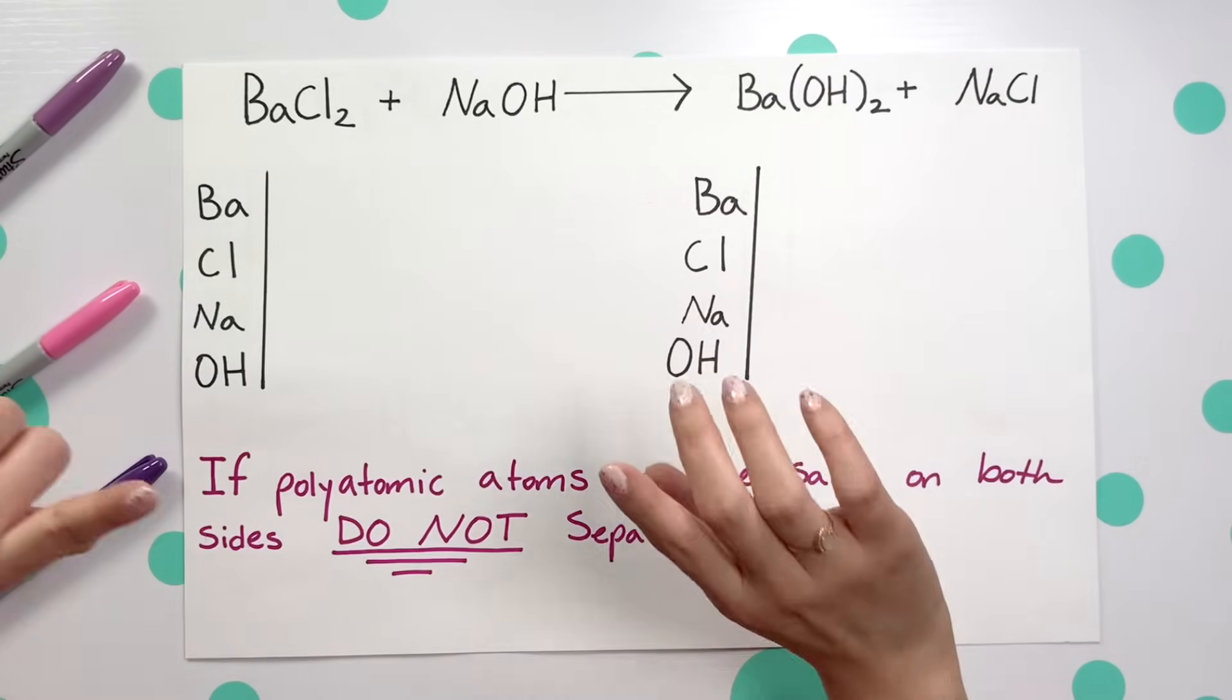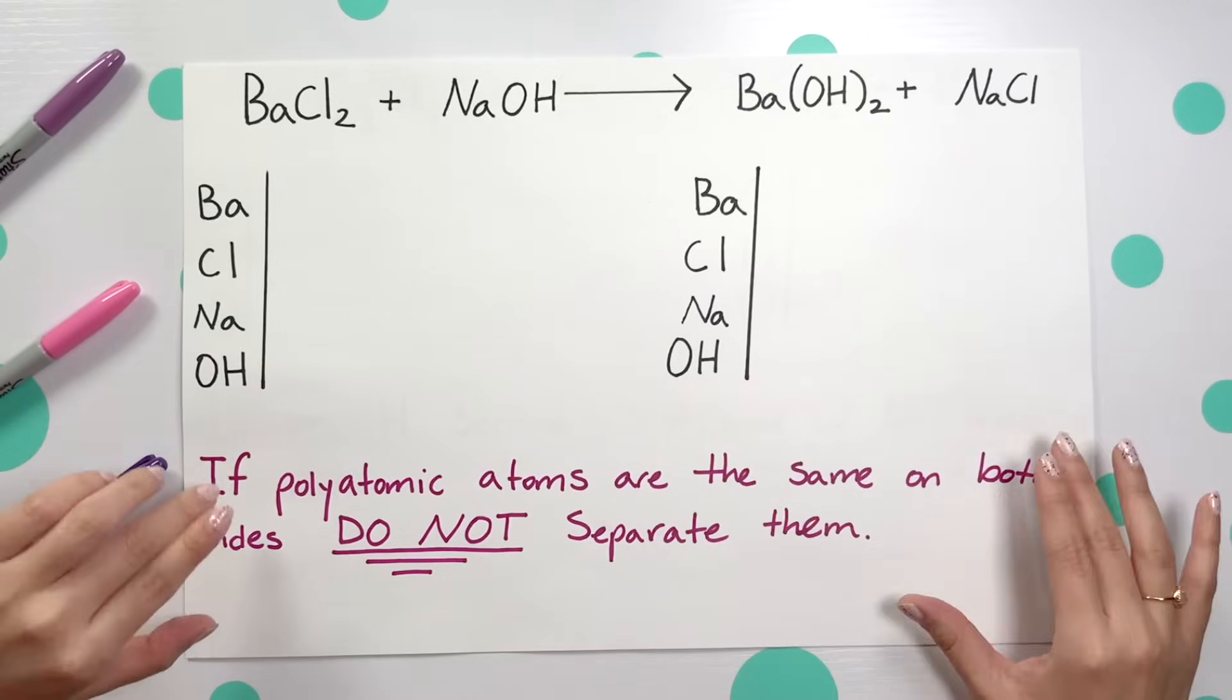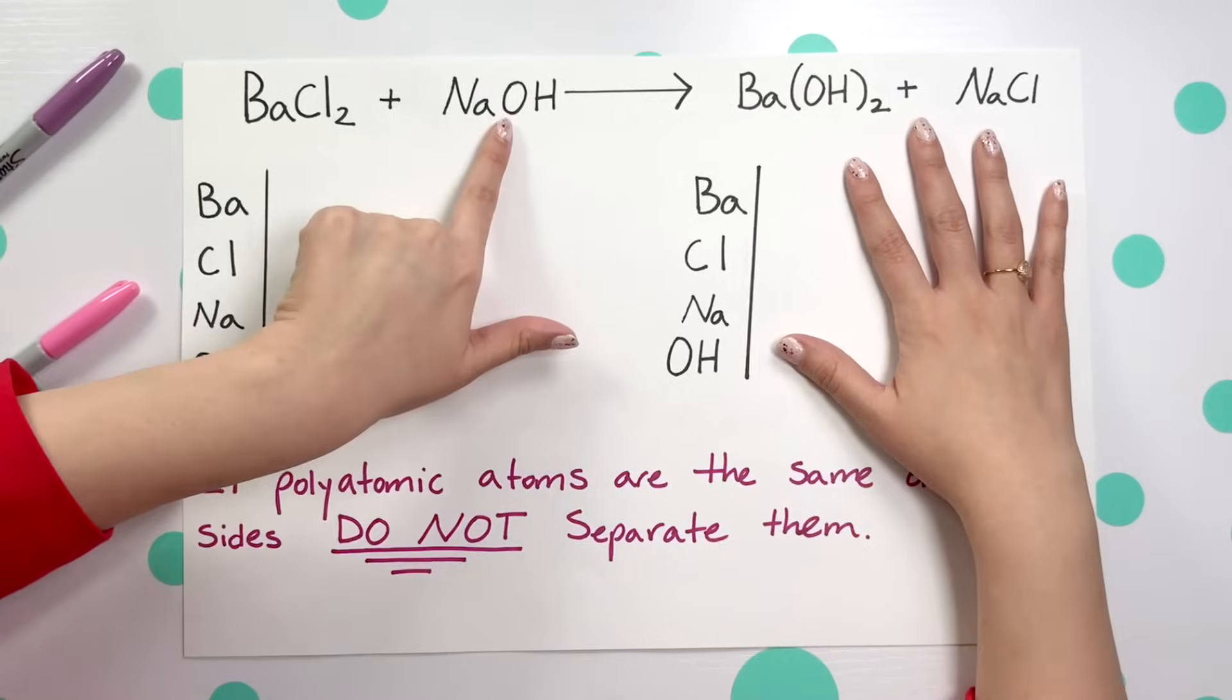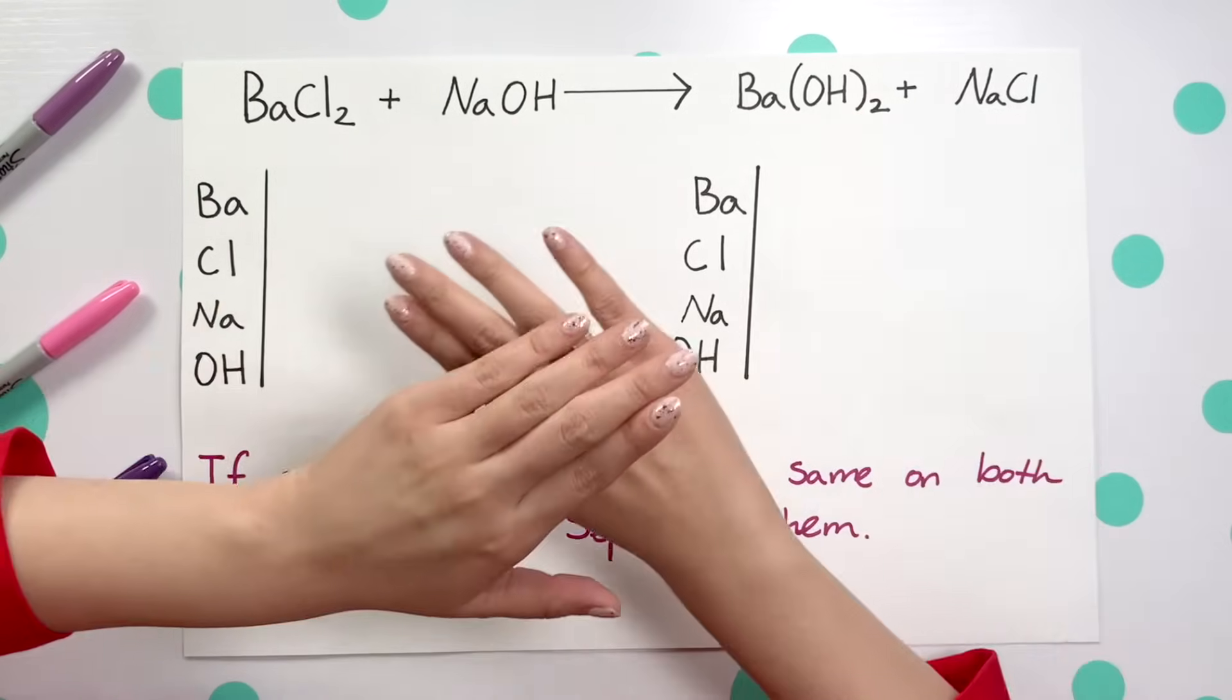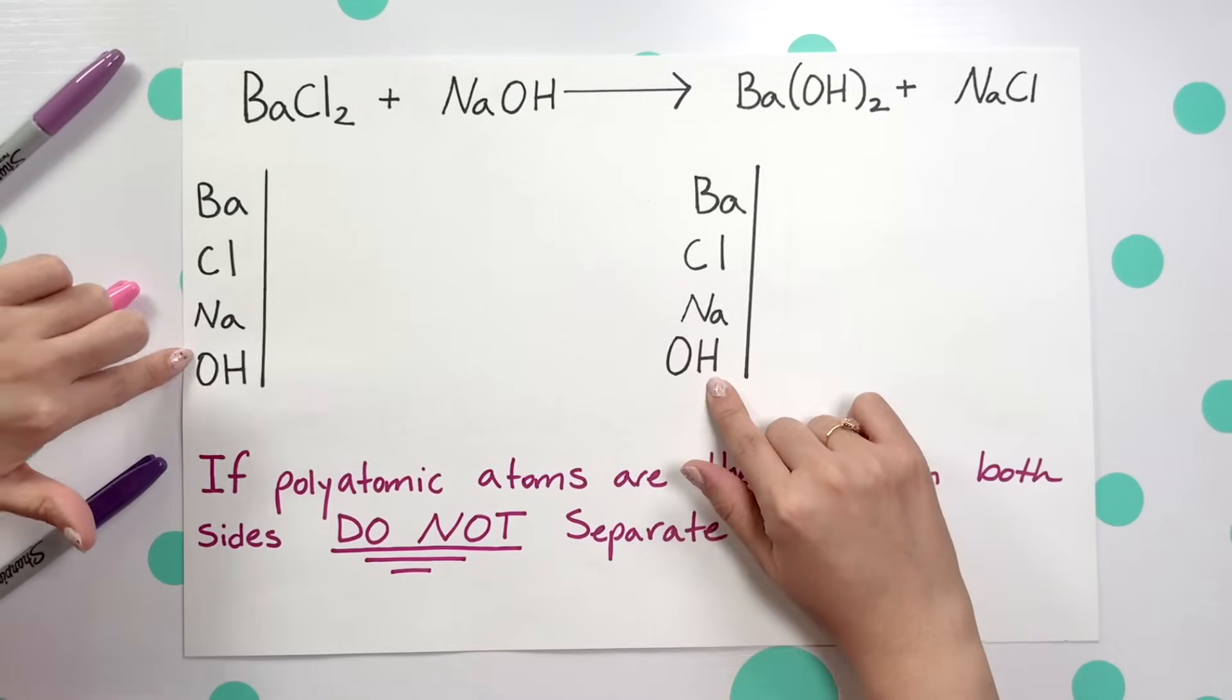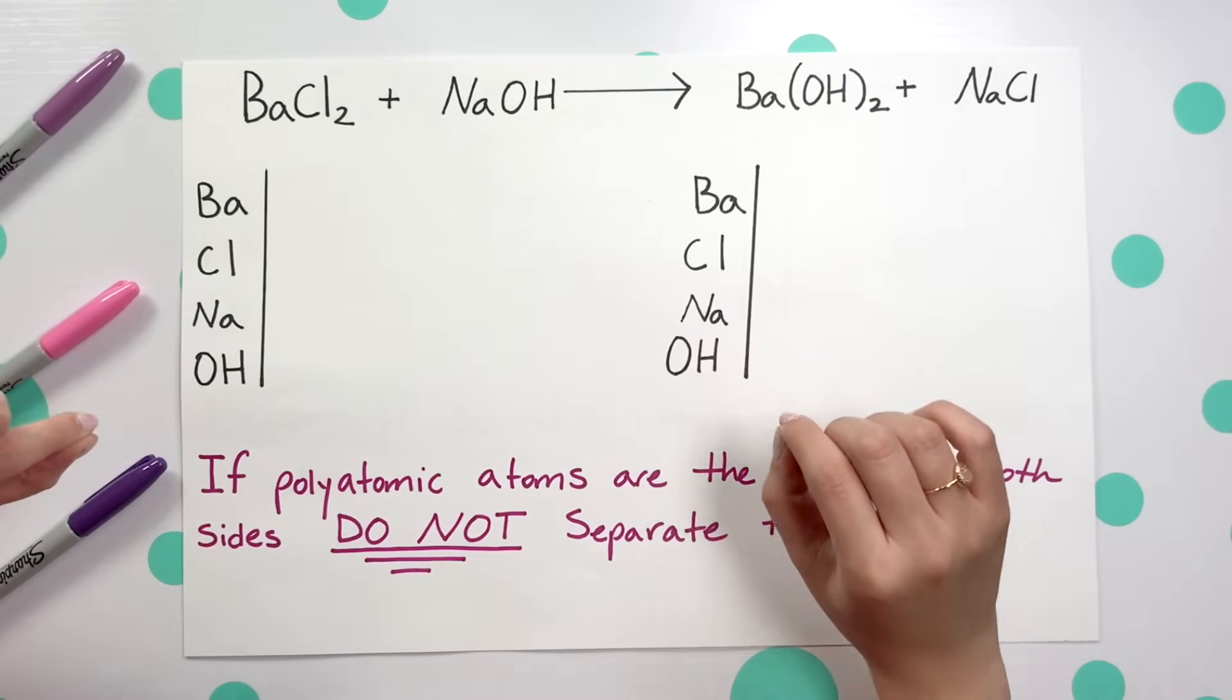Now my tip for you is for any polyatomic atoms that are the same on both sides, like our OH and our OH here, do not separate them. We're going to leave the OHs intact to make it a lot easier to balance everything out.